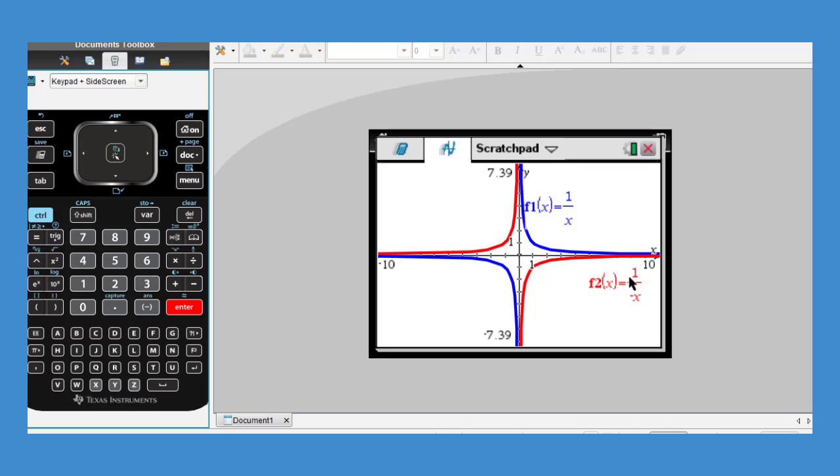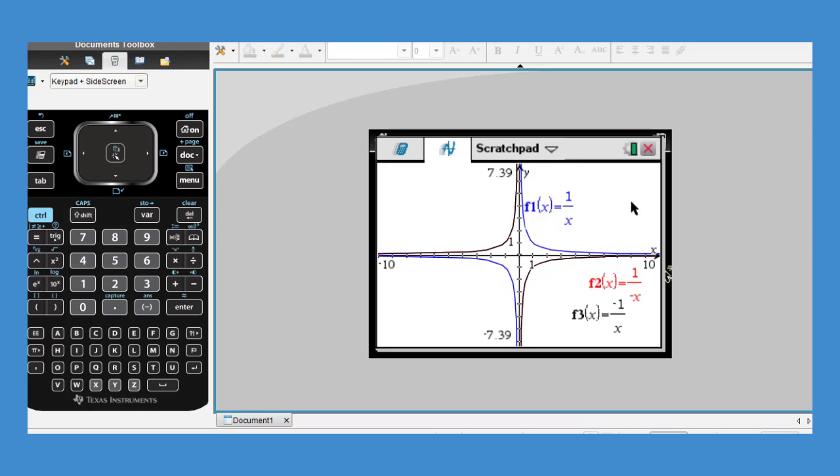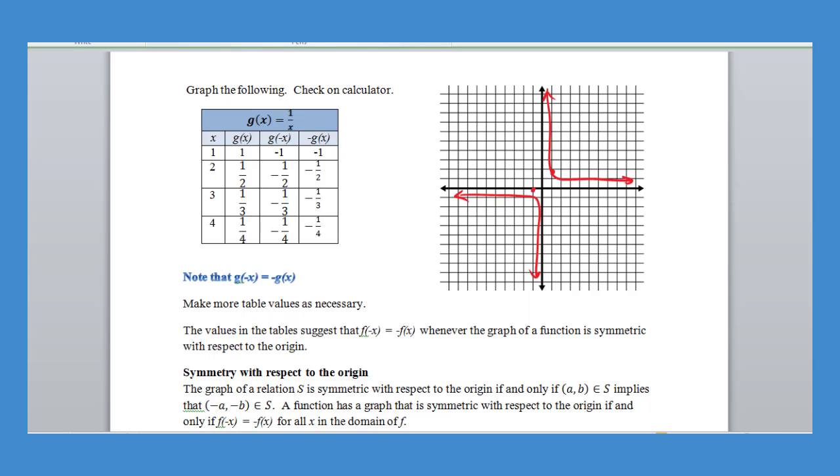Now other than just looking at it, I know that this will be point symmetry with respect to the origin if the negative function is the same. So this time I'm put a negative one divided by X and hit enter. And of course we have the same graph and it just overlays the top of that. And so that tells us very clearly that this graph has point symmetry with respect to the origin.